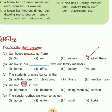Part B: we live in our blank with our family members. Where do we live with our family members — home, office, factory, or zoo? We live in our home, so home is the correct answer. Part C: the students practice dance in the activity room, playground, library, or medical room? The correct answer is activity room, because dancing is an activity.